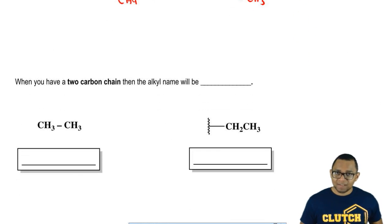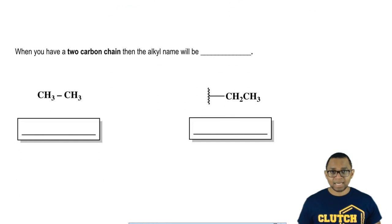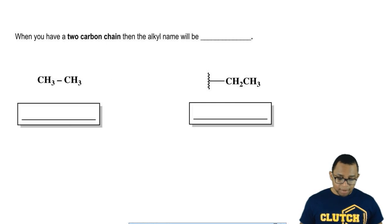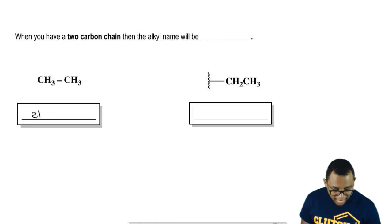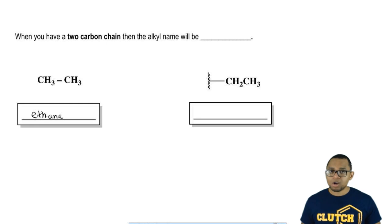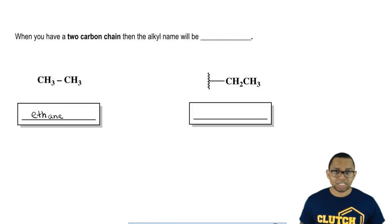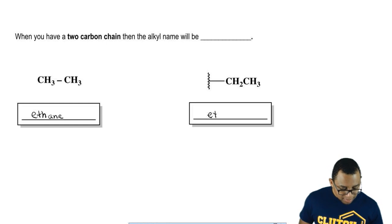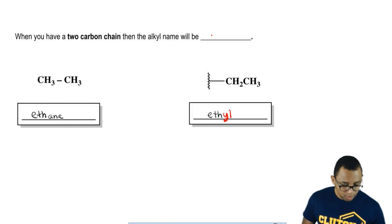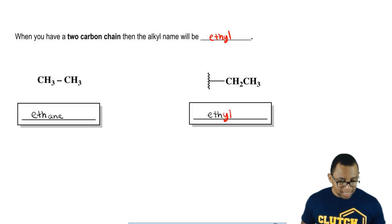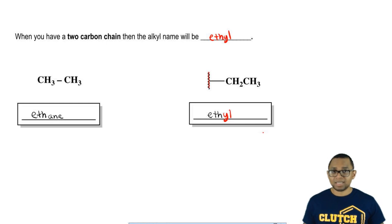If we take an H off of methane it gives us methyl — then what else can we take an H off of and name as an alkyl group? When you have a two-carbon chain, the alkane name is ethane. We're taking off an H from one of the end carbons; when we do that we create an alkyl group and the ending changes from -ane to -yl. The prefix stays the same, so it becomes ethyl. We don't know what it's connected to, but it's connected to something. That's what an ethyl group would look like.